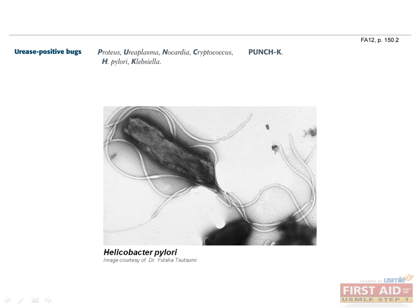Other bugs in addition to H. pylori which have urease include Proteus, Ureaplasma, Nocardia, Cryptococcus, and Klebsiella.